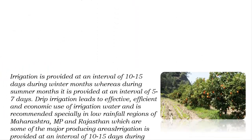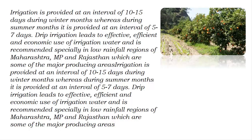Irrigation is provided at an interval of 10 to 15 days during winter months, whereas during summer months it is provided at an interval of 5 to 7 days. Drip irrigation leads to effective, efficient and economic use of irrigation water and is recommended especially in low rainfall regions of Maharashtra, Madhya Pradesh and Rajasthan, which are some of the major producing areas.